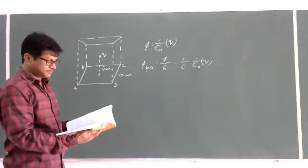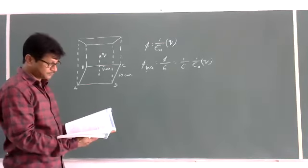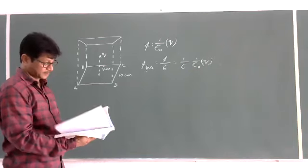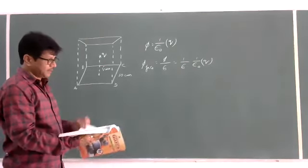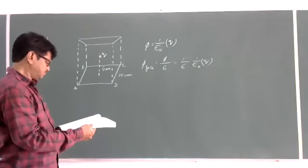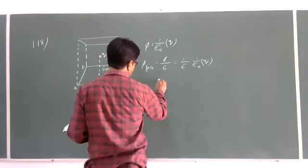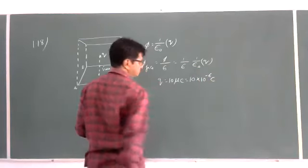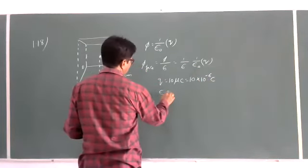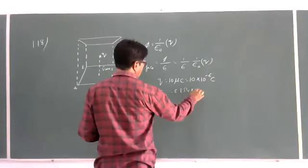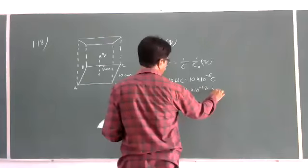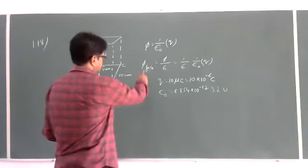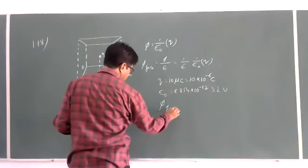We know all the values. Q is given as 10 microcoulombs, which is 10 × 10⁻⁶ coulombs. Epsilon naught is 8.854 × 10⁻¹² newton meter squared per coulomb squared. He is asking us to find the flux coming through a single face — you can do the calculations.